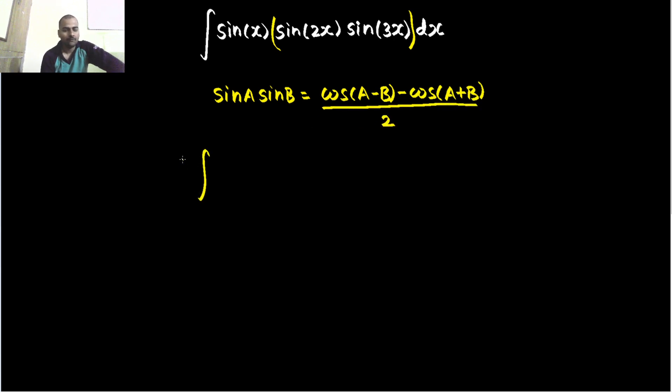So we will get 1 by 2. This sin x will remain as it is and this can now be written as cos of 2x minus 3x, that is minus x,